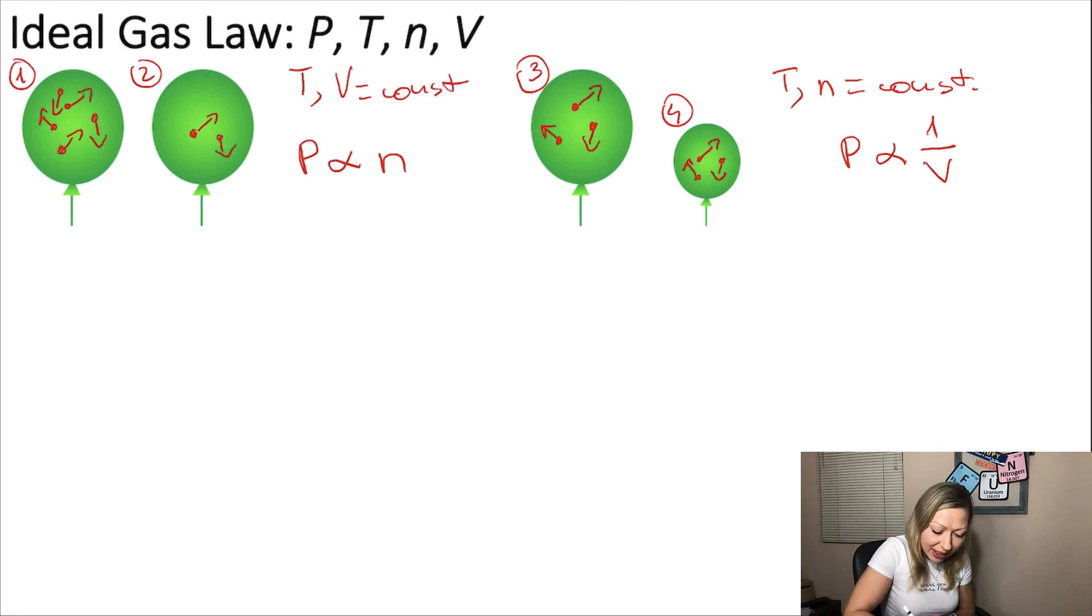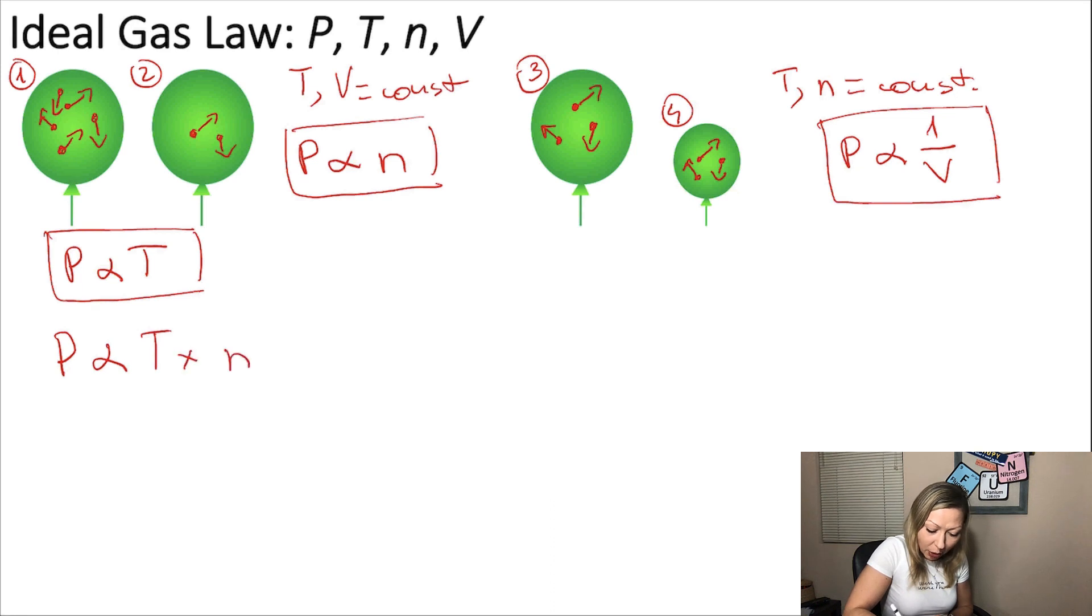And on the previous slide, we learned that the pressure is actually directly proportional to the temperature. So, we can take these three expressions and put them together into one. So, the pressure will be directly proportional to the temperature multiplied by the number of moles multiplied by one over volume, which also means that the pressure equals to some kind of constant multiplied by the temperature multiplied by the number of moles multiplied by one over volume. If I define this constant as R, which is going to be the so-called gas constant, then my equation changes for the following.